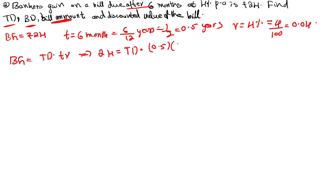BG equals 24 rupees equal to TD × t (0.5) × r (0.04). Simplifying this, TD value is equal to rupees 1200. So 1200 is the true discount value.